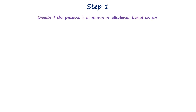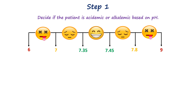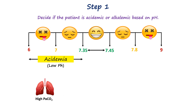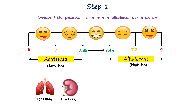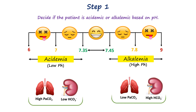Step one in interpreting acid-base disorders is to determine whether the patient is acidemic or alkalemic by assessing the pH value. A normal arterial pH ranges from 7.35 to 7.45. If pH is less than 7.35, the patient is considered acidemic, indicating an excess of hydrogen ions or a deficit in buffering capacity — reflecting excess carbon dioxide or a deficiency of bicarbonate. Conversely, if pH is greater than 7.45, the patient is alkalemic, reflecting either a reduction in carbon dioxide or an increase in bicarbonate.